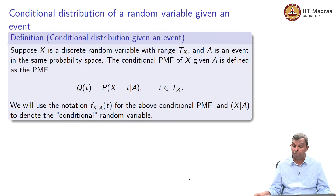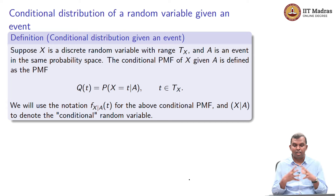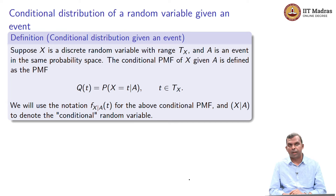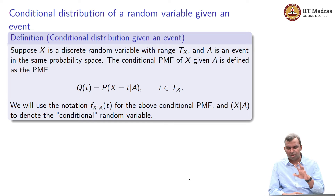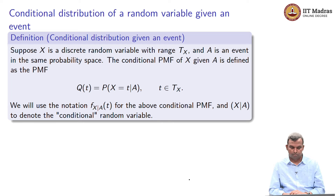Next we move on to one more type of PMF that you can have once you have random variables and events. This is called conditional distributions. First we look at just one random variable. This is a very simple case where, supposing you have a random variable X defined in a probability space, and there is an event defined A.